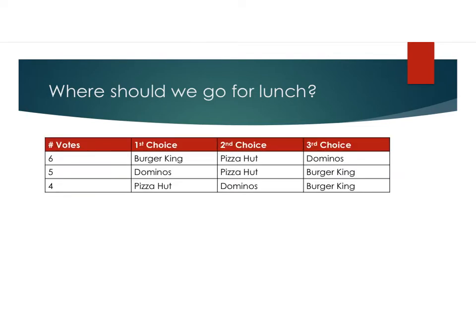These people ranked their votes. Six people said Burger King was their first choice, Pizza Hut was their second choice, and Domino's was their third choice. Five people said Domino's was their first choice, Pizza Hut was their second choice, and Burger King was their third choice. And four people said Pizza Hut was their first choice, Domino's was the second choice, and Burger King was their third choice.